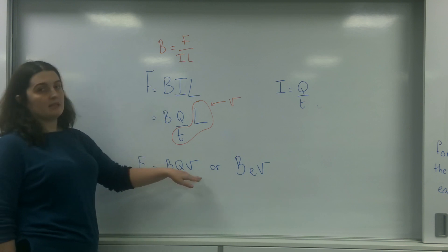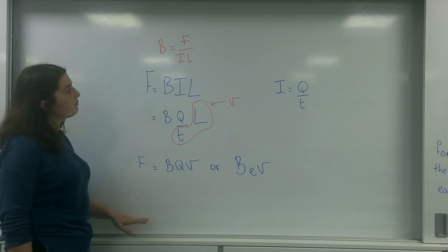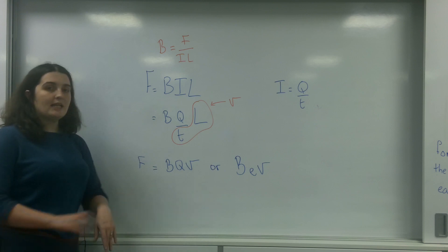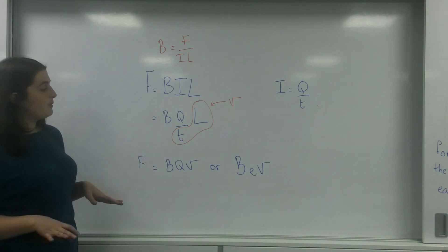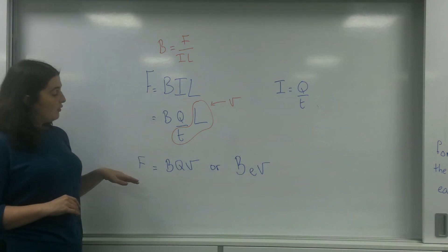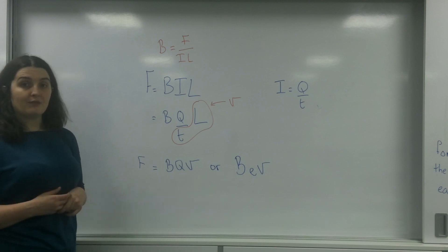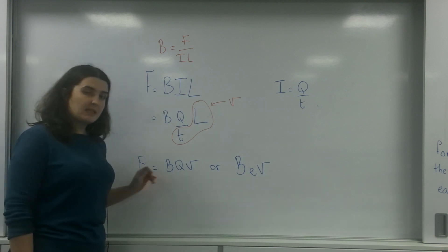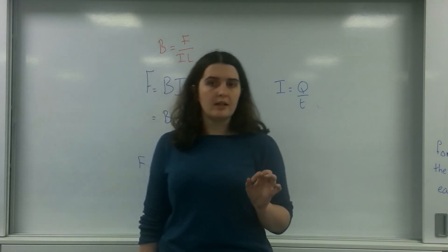Because this would be coulombs and this is meters per second. So what I've done here is derived another formula which we can use for looking at magnetic forces. And this one is particularly useful in cyclotrons.